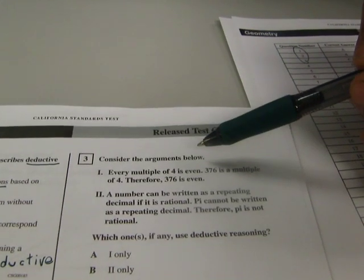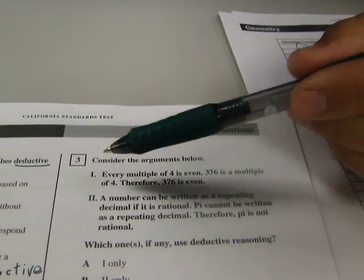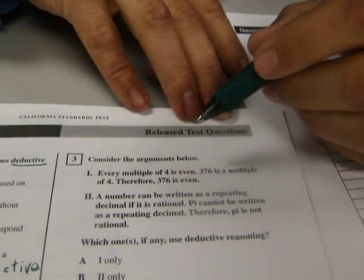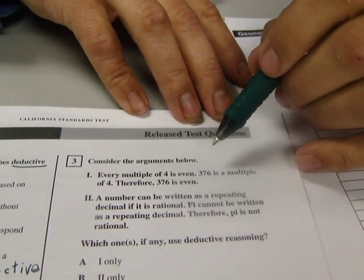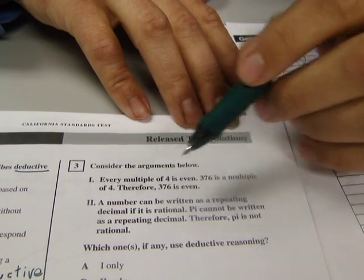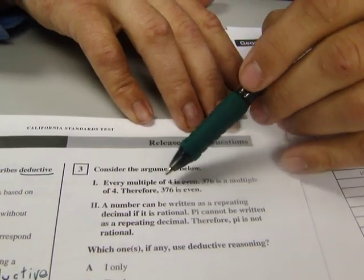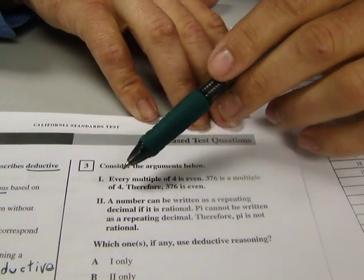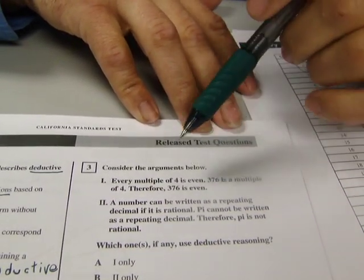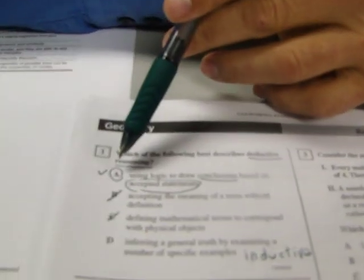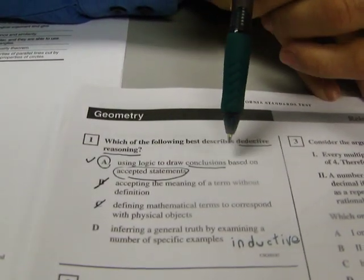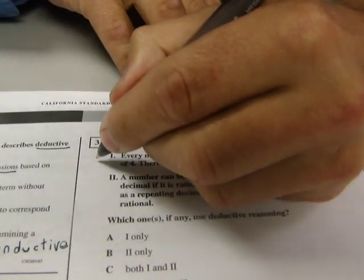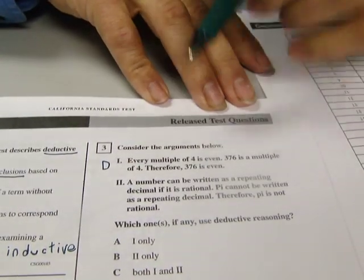Last, consider the argument below. One, every multiple of four is even. So all multiples of four are even. Three hundred and seventy-six is a multiple of four. Therefore, 376 is even. Well, what we did here is we took a fact and a second fact and we drew a conclusion. If we go back to number one, that said using logic to draw conclusions based on accepted statements is deductive reasoning. So it sounds like this is deductive. So I'm going to say that that looks like deductive. Let's look at number two.